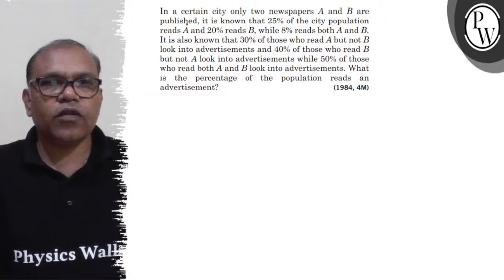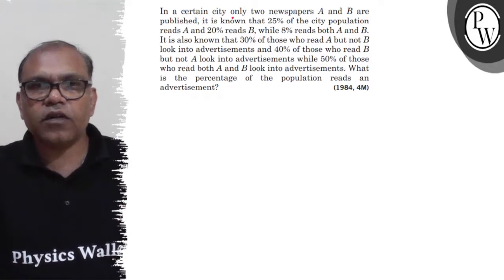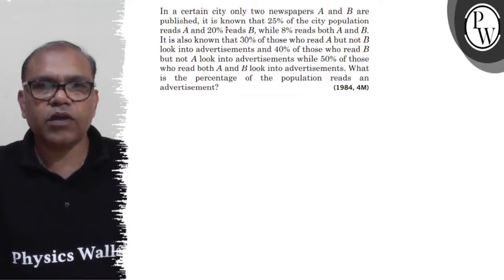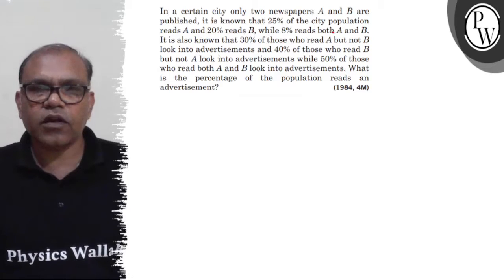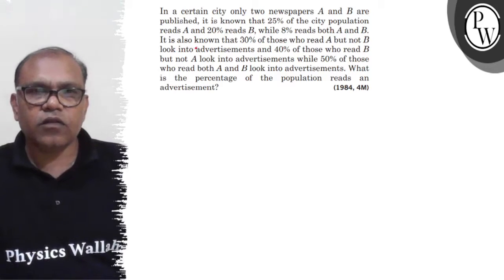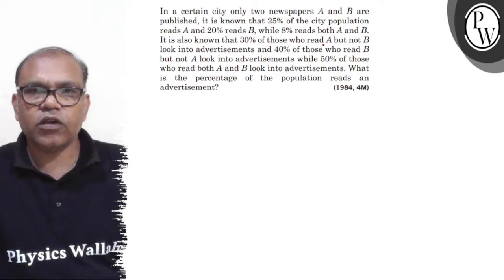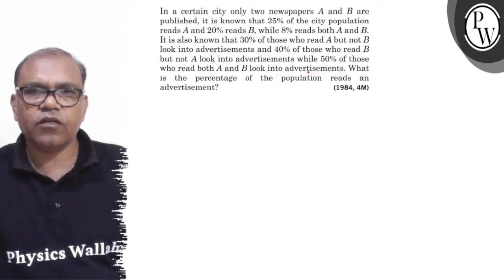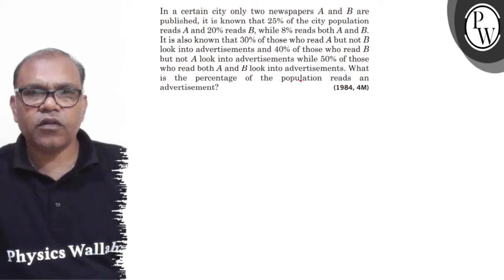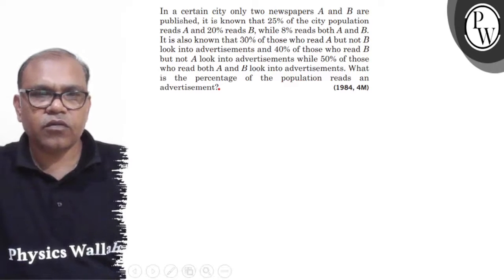Hello, Bacho. Let's see the question. The question says: in a certain city, only two newspapers A and B are published. It is known that 25% of the city population reads A and 20% reads B, while 8% reads both A and B. It is also known that 30% of those who read A but not B look into advertisements, and 40% of those who read B but not A look into advertisements, while 50% of those who read both A and B look into advertisements. What is the percentage of population that reads an advertisement?